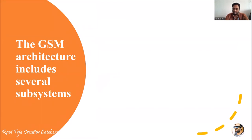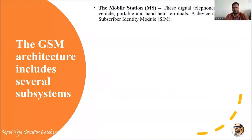Now let's see the architecture of GSM. The GSM architecture includes several subsystems. The first is the Mobile Station, which can be your mobile device, a smartphone, or any device used for conversation — in a vehicle or a portable handheld terminal.